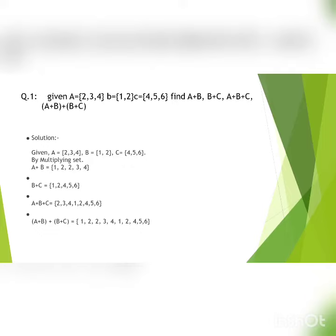The first question is: given A equals 2, 3, 4, B equals 1, 2, and C equals 4, 5, 6. We have to find the values of A plus B, B plus C, A plus B plus C, and A plus B plus B plus C.